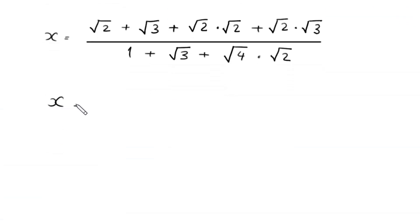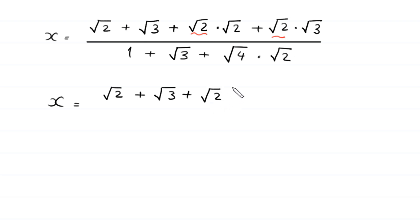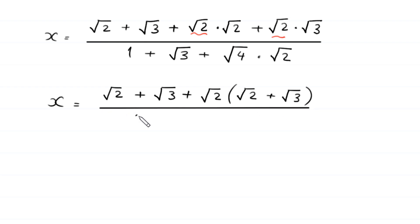Next, x is equal to square root of 2 plus square root of 3. From these two terms we factor out square root of 2 as a common factor, leaving in brackets square root of 2 plus square root of 3, divided by 1 plus square root of 3 plus 1 plus square root of 2 plus square root of 2 plus square root of 3.